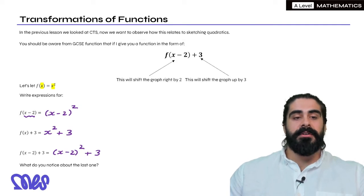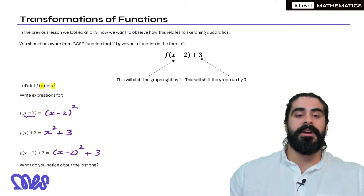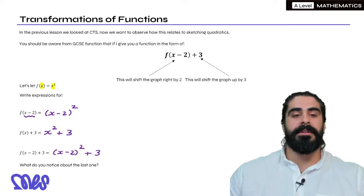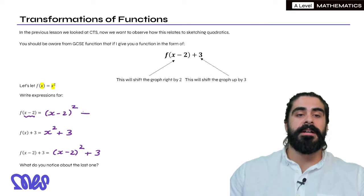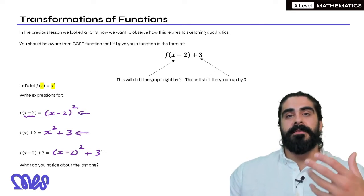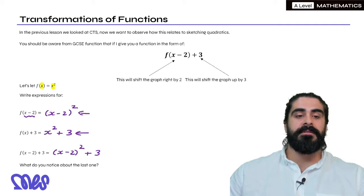Now what do you notice about the last one? What you should notice is that it is a quadratic in its completed square form or a more obvious completed square form. In fact the first one is in completed square form. This one is too. But in terms of the process of completing the square, the last one is a more traditional form that we always see.